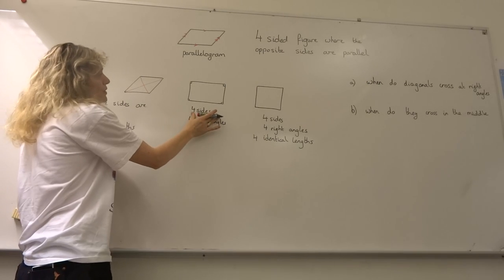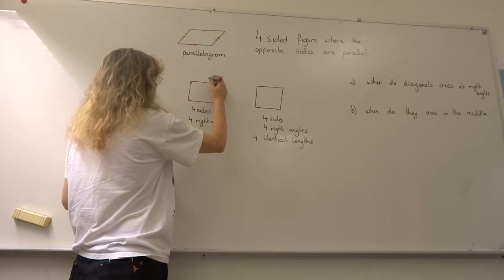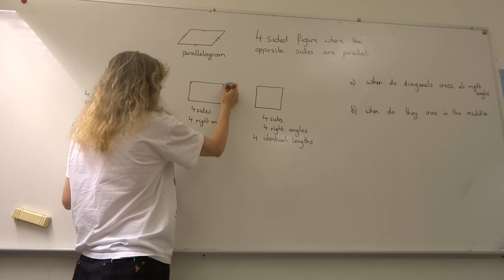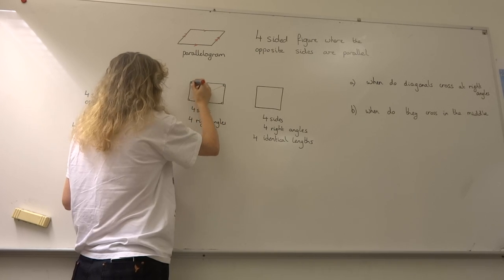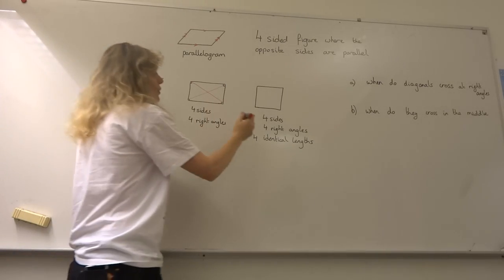Here we have a rectangle with four sides and four right angles, but the sides aren't necessarily the same length. We're going to investigate what happens when we make these diagonals for a rectangle.